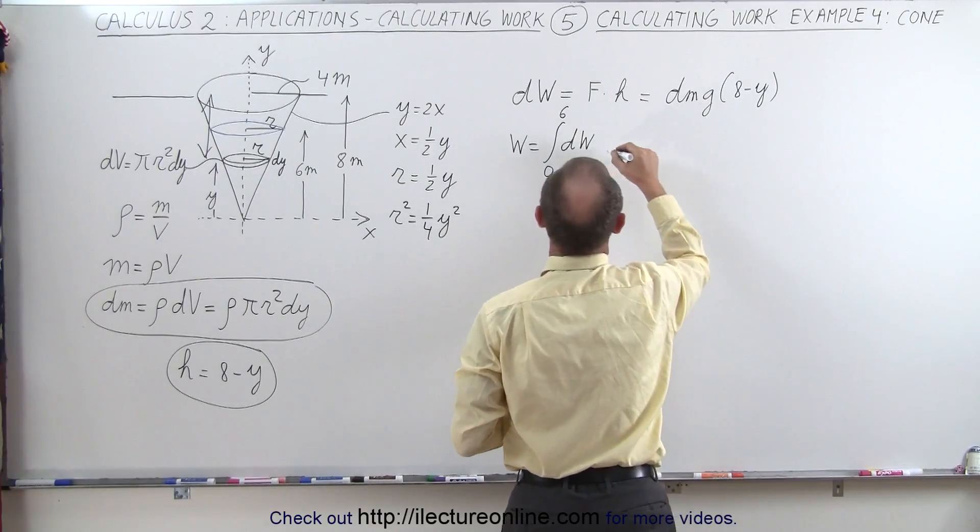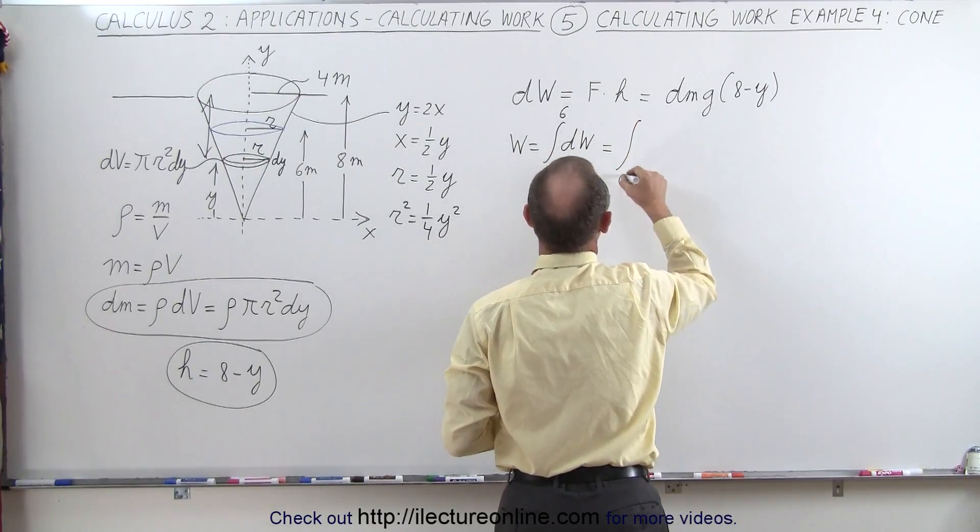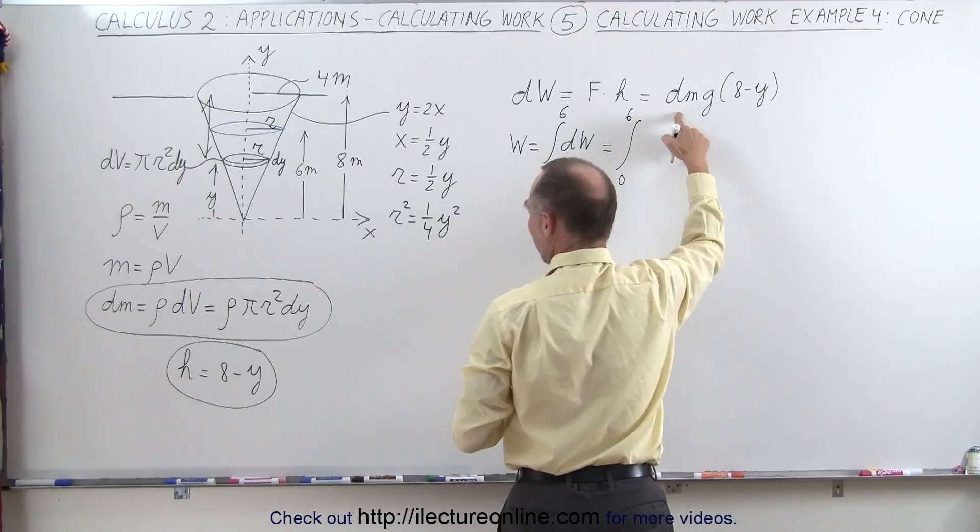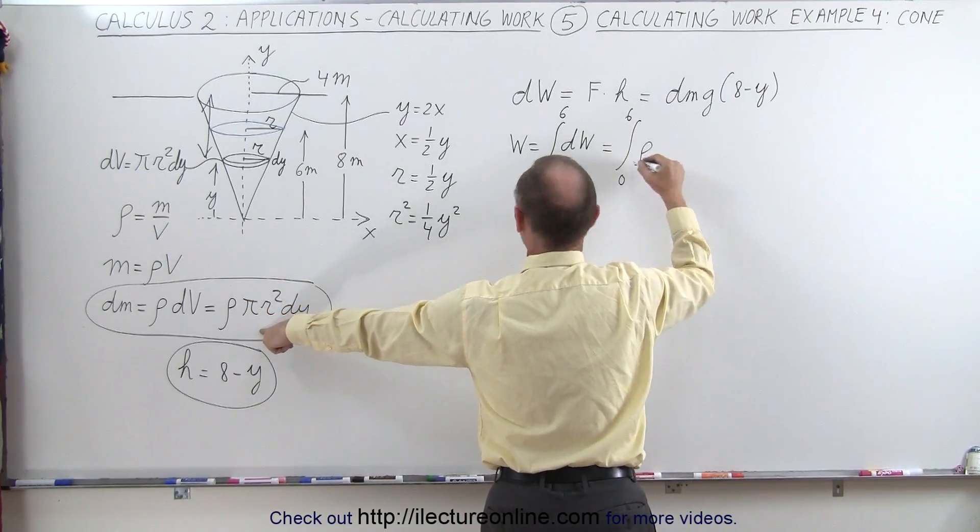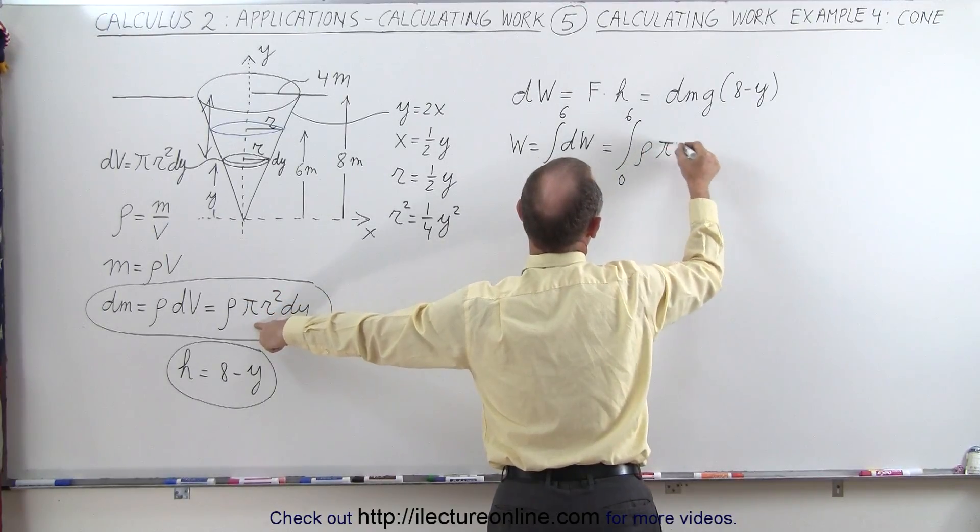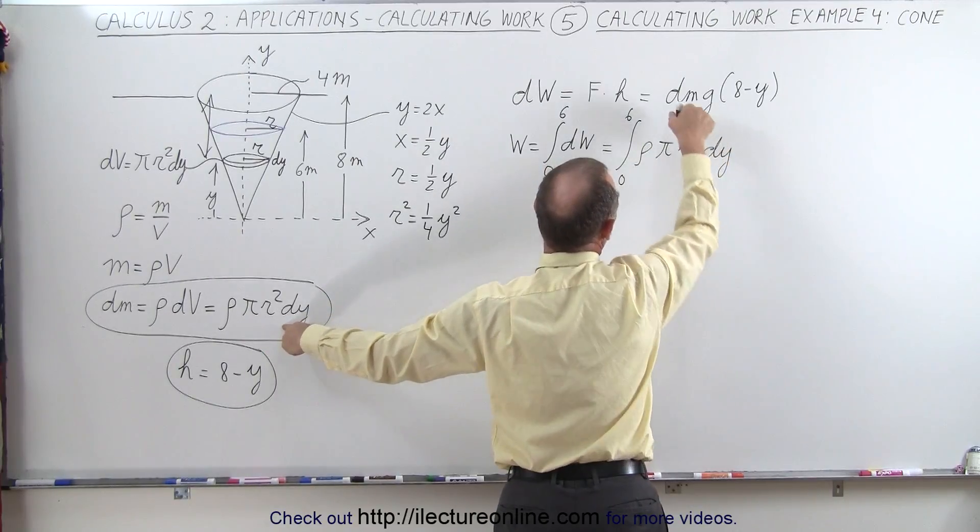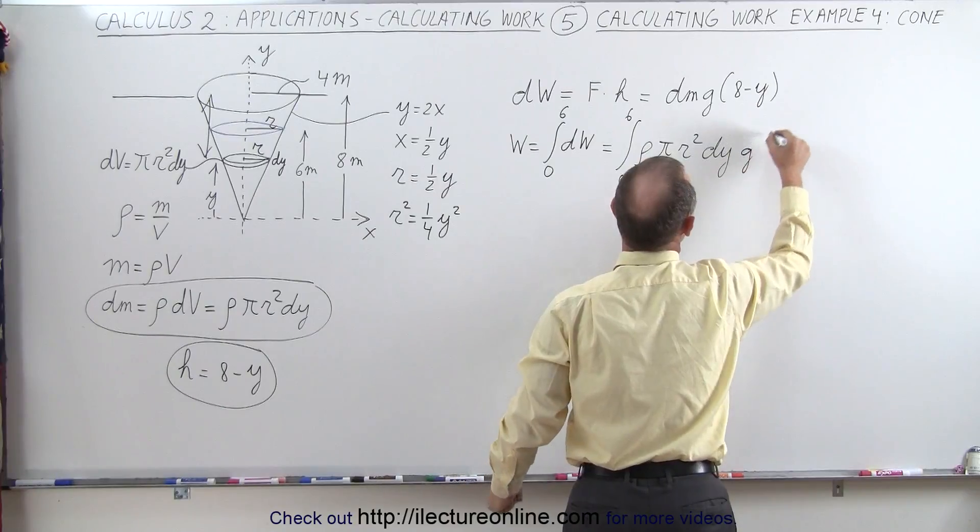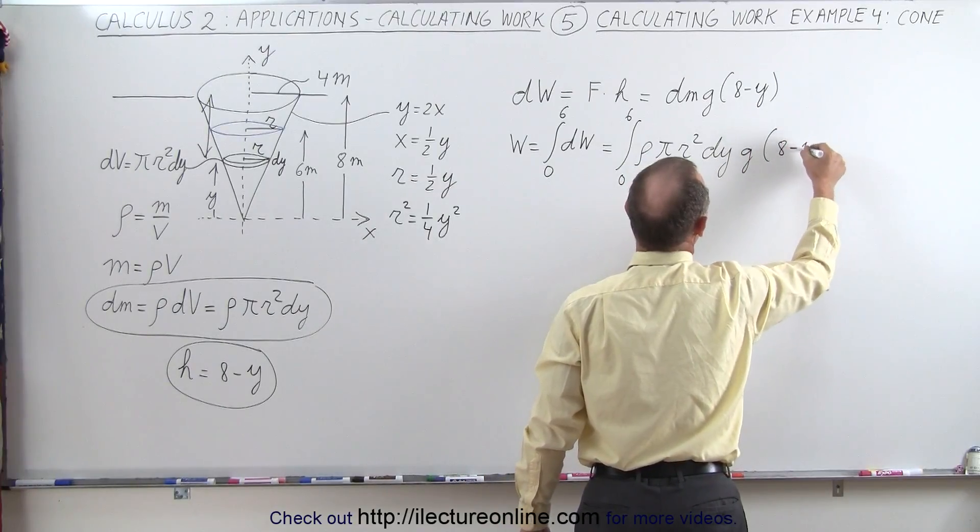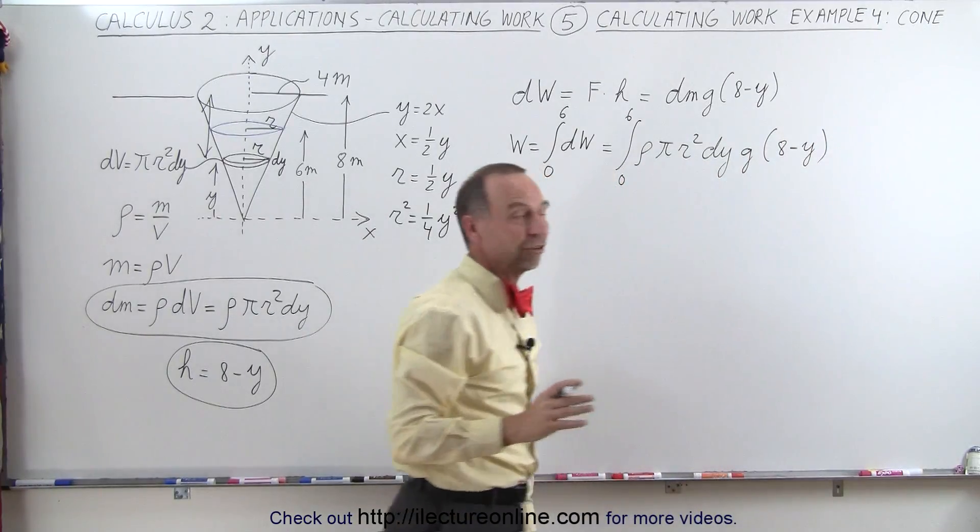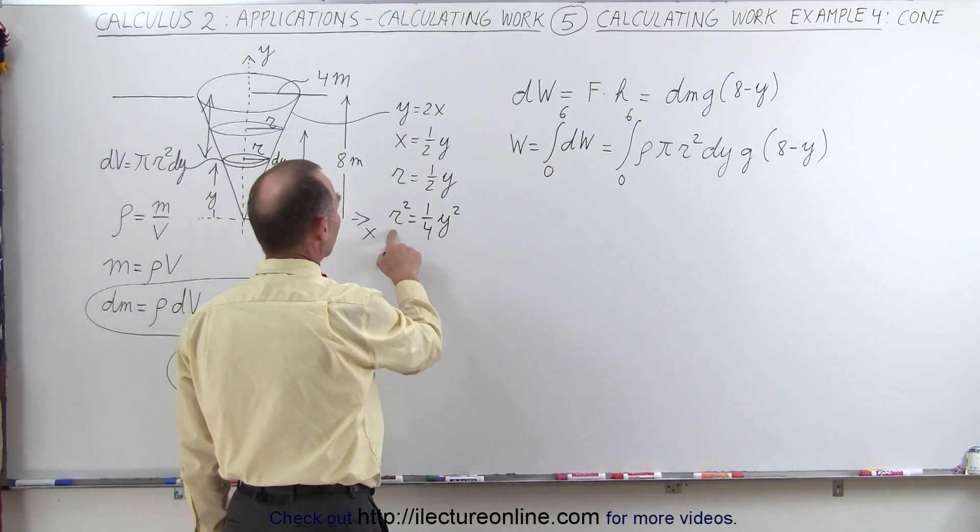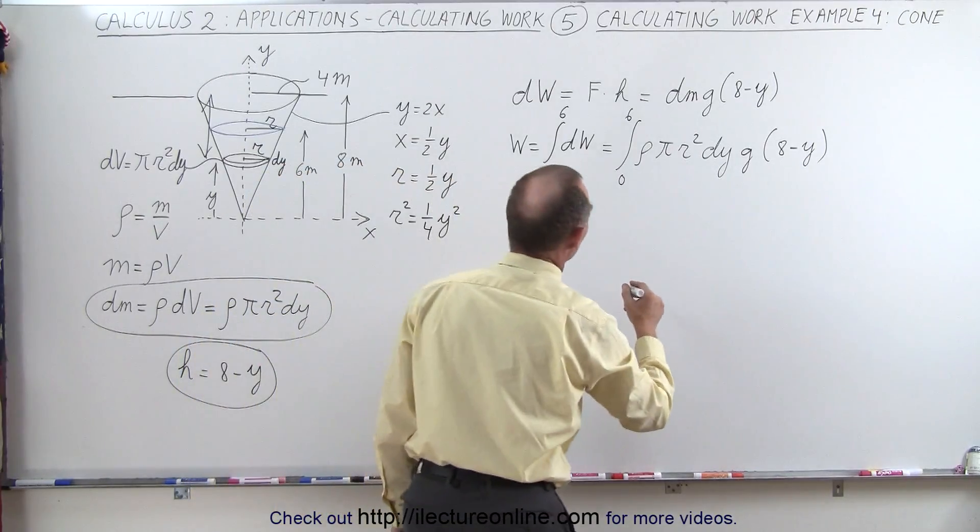And dw is equal to this. So that's equal to the integral from 0 to 6 of dm. Now dm is equal to rho pi r squared dy. So that's our dm times g multiplied times 8 minus y. And of course at this point we realize we have to make that replacement instead of r squared. We'll write one quarter y squared.